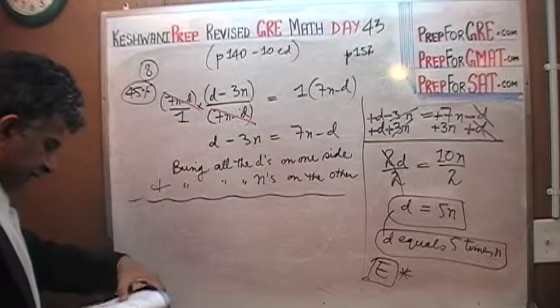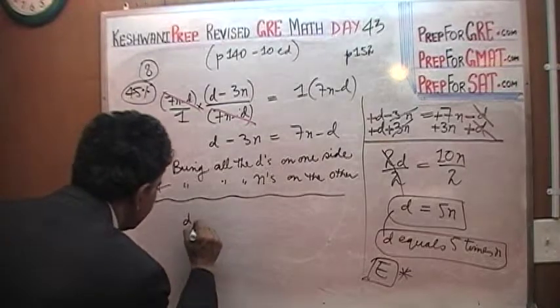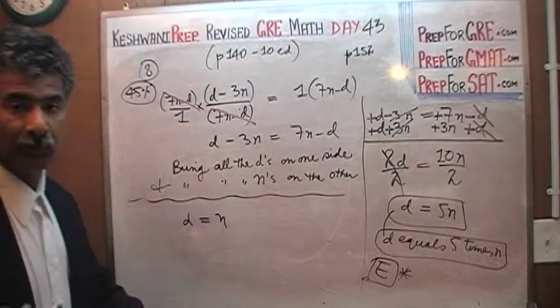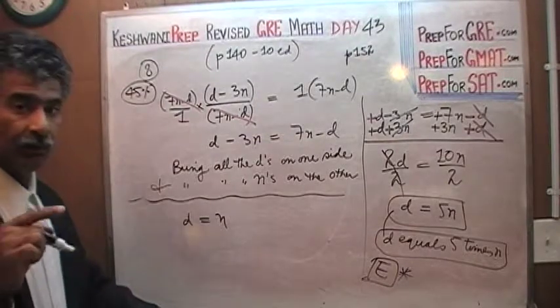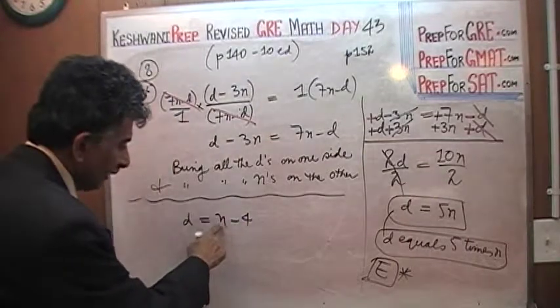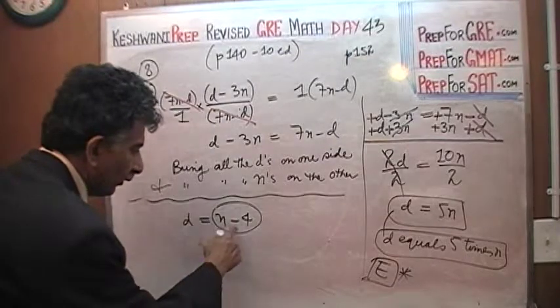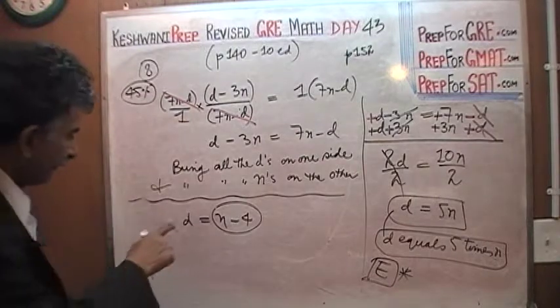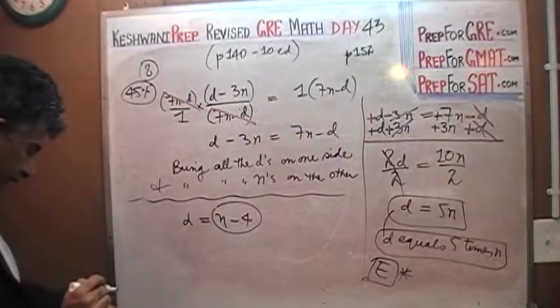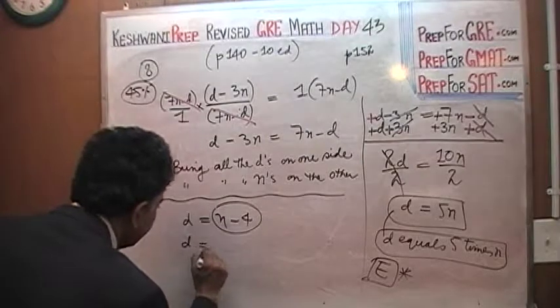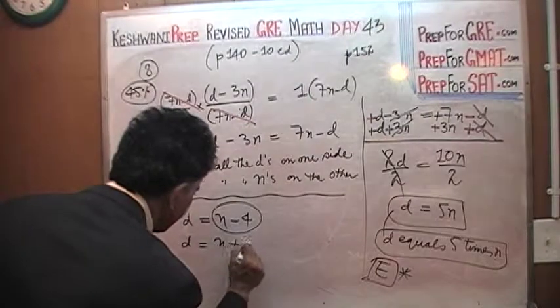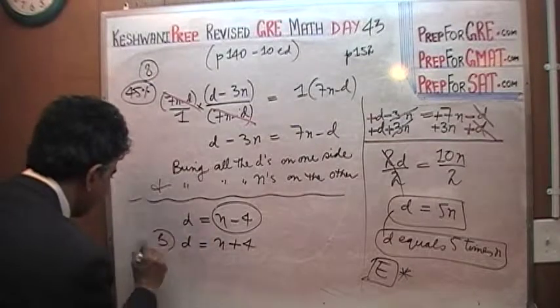The first statement says D is four less than N. D is N, which is the same as saying D equals N, but that's not what A says. A says D is four less than N, so whatever N is, you have to take four away from it. So it's D equals N minus 4. But that's not what we found here. The second one says D is four more than N. D does not equal N. D is four more than N, so we have to give four to it. That was B.